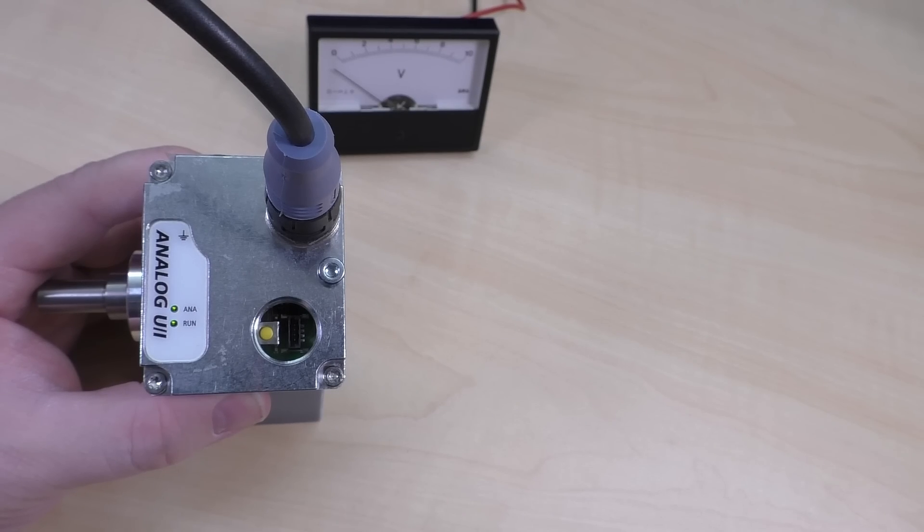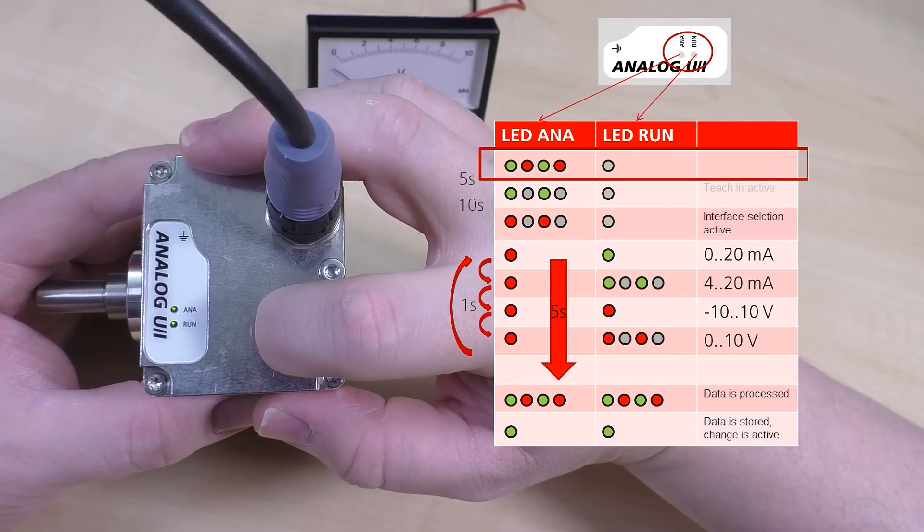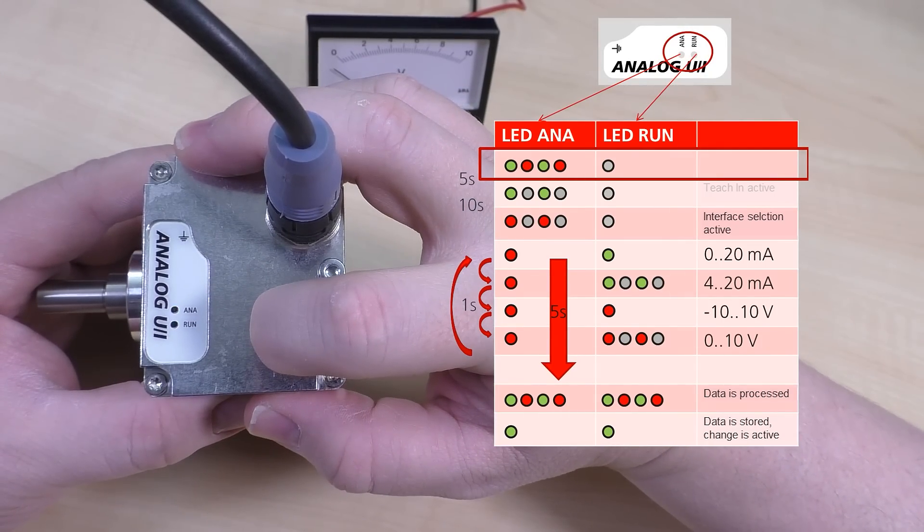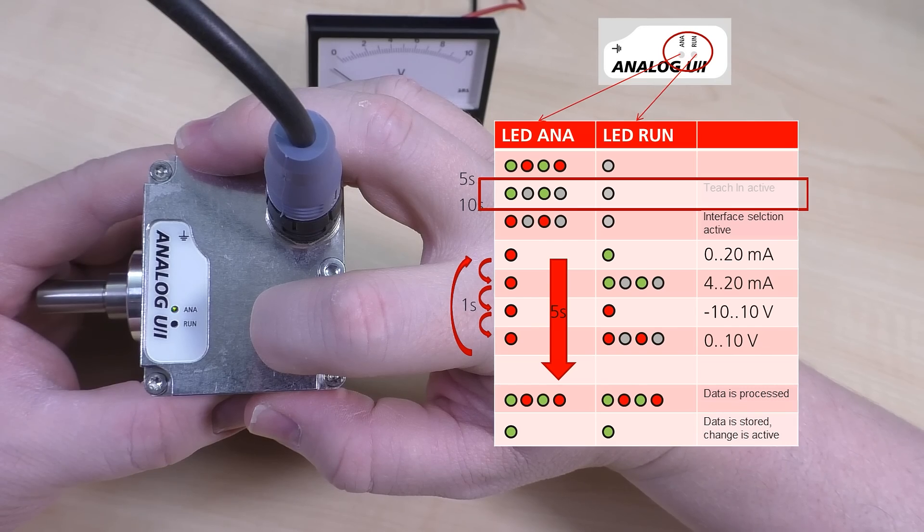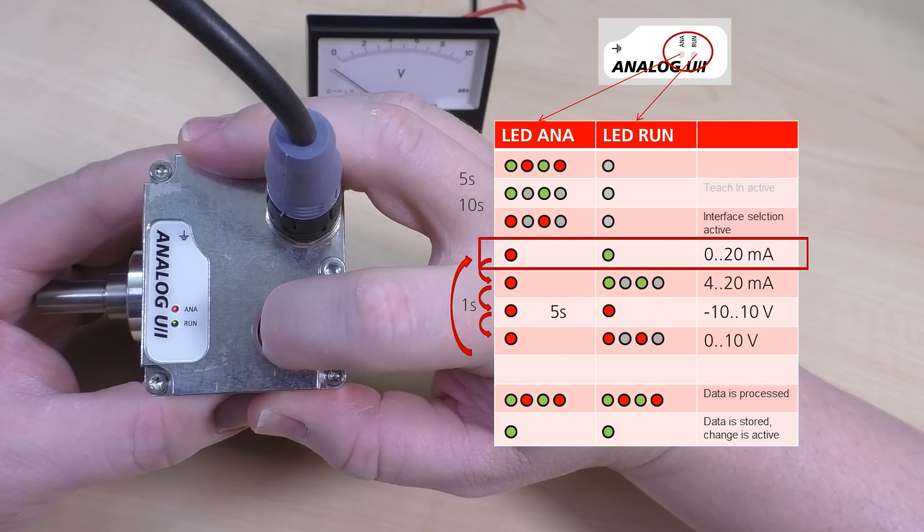First, let's select the output mode. Press the button and keep it pressed down. The LED labeled Ana starts flashing alternately between red and green. The blinking pattern will then switch to just a green flashing LED to just a red flashing LED. Now you can let go of the button.